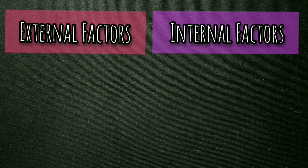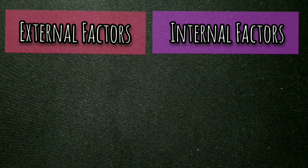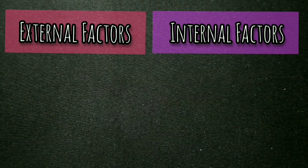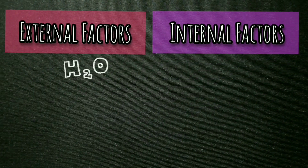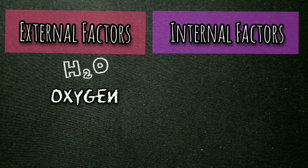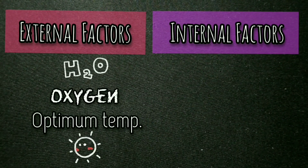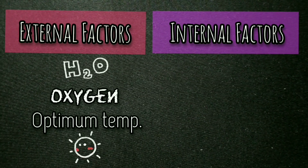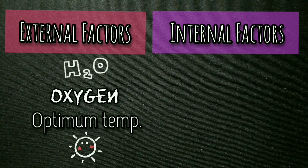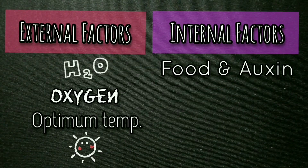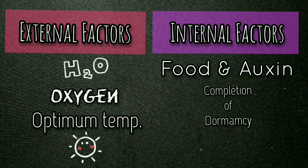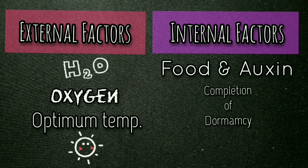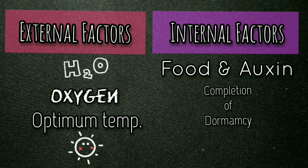There are a few external and internal factors which are necessary for germination. External factors are moisture, oxygen, optimal temperature, and light. There are internal factors as well, which are food and auxins — the growth hormones — completion of the resting period or dormancy period, and the viability of seeds.